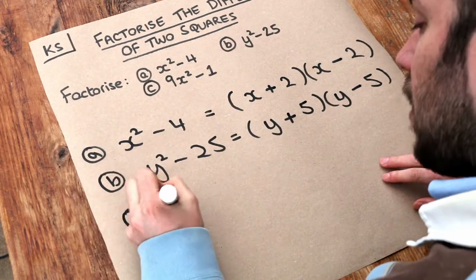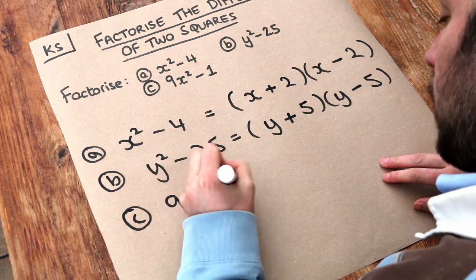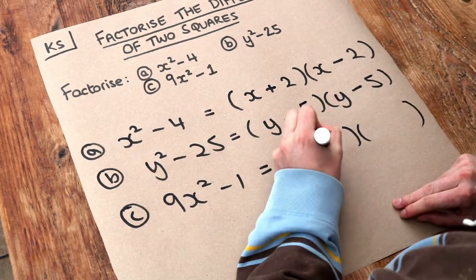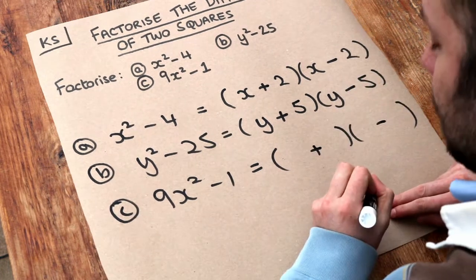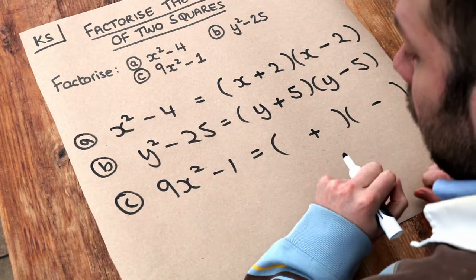And then finally, a slightly harder one: 9x squared minus 1. Two brackets again. Plus in the middle of one, minus in the middle of the other. Now, what's the square root of 9x squared?